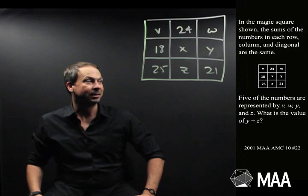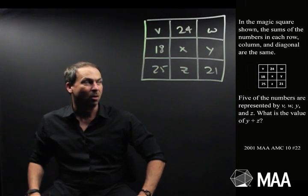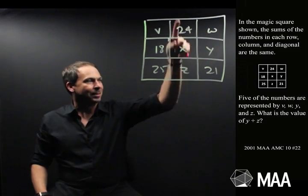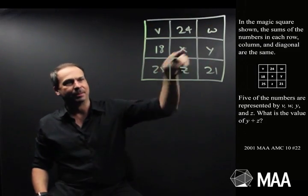In the magic square shown, the sums of the numbers in each row, column and diagonal are the same. That's a magic square. Every row adds up the same, column adds up the same, diagonals add up to the same.